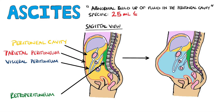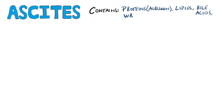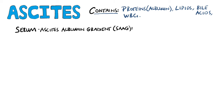So how do we end up with fluid buildup in this cavity and how do we find out what caused it? We can start by looking at what the ascitic fluid is made of. It includes proteins such as albumin, lipids, bile acids, and sometimes white blood cells. We analyse the fluid by taking a sample via paracentesis.